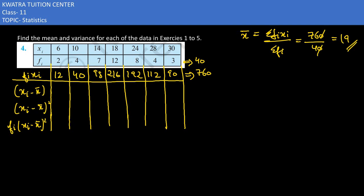First let's complete the table, xi minus x̄. So this is: 6 minus 19 is minus 13, 10 minus 19 is minus 9, 14 minus 19 is minus 5, 18 minus 19 is minus 1, 24 minus 19 is 5, 28 minus 19.